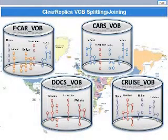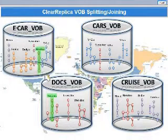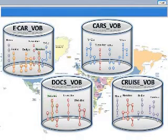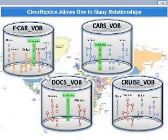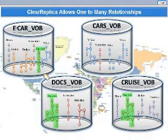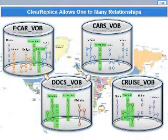The documentation company was also contracted by the cruise company to produce user manuals for the GPS navigation software in multiple languages. The cruise ship company, as part of the contract with you, has given the documentation company permission to replicate the documentation to you, but only the versions on the English language branch. So with ClearReplica, it is possible to replicate parts of a VOB based on elements or branches to different VOBs without having to reorganize the VOB from its natural setup in the remote location.